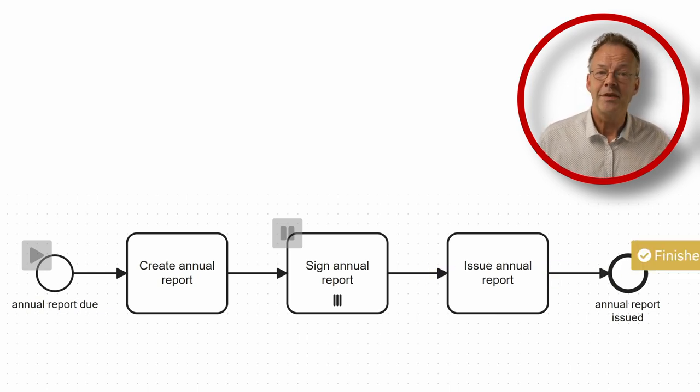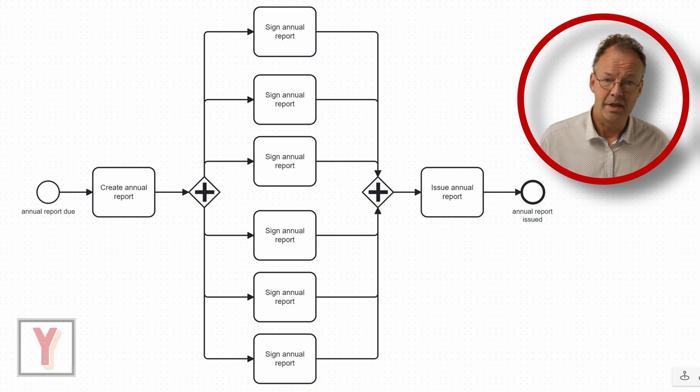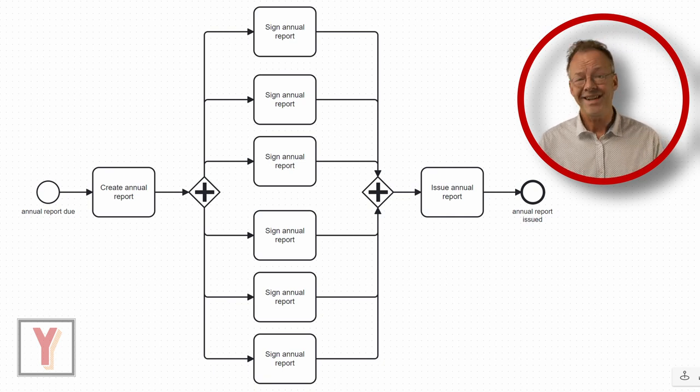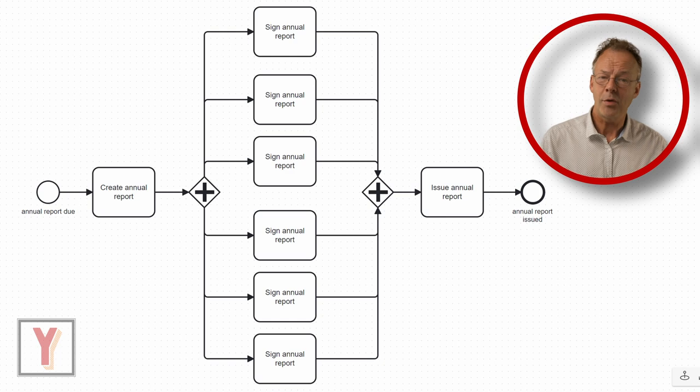A word about the design time knowledge. Because we knew that there are six directors, when we edited the workflow, we could have achieved exactly the same behavior without a multiple instance task using this diagram. Thank you for watching.